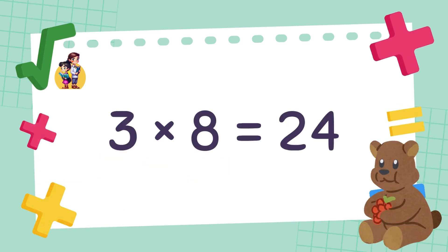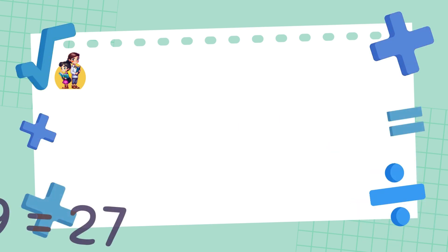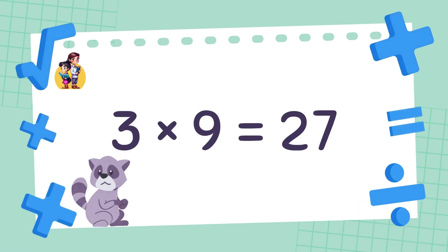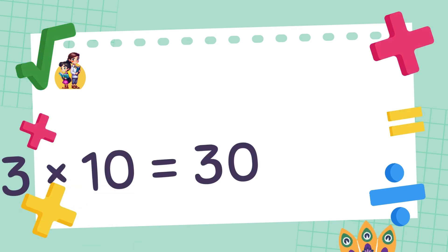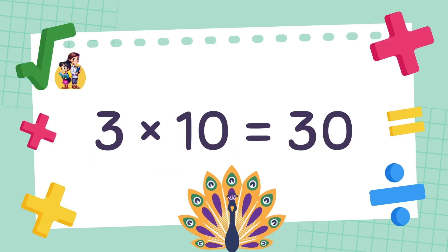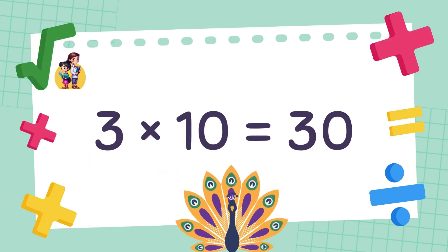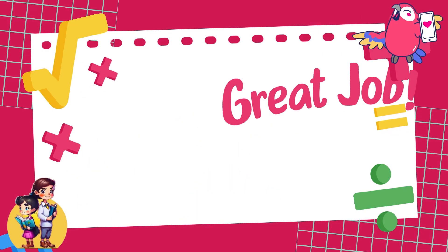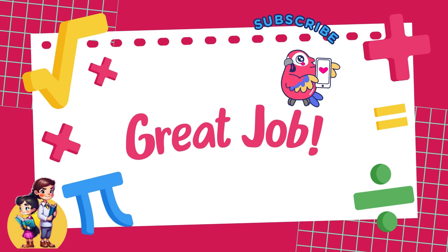3 times 8 is equal to 24. 3 times 9 is equal to 27. 3 times 10 is equal to 30. Great job!